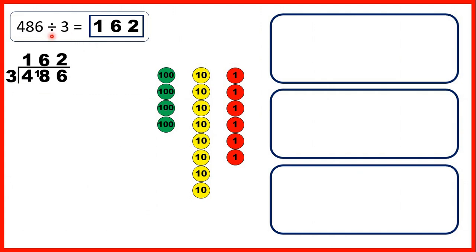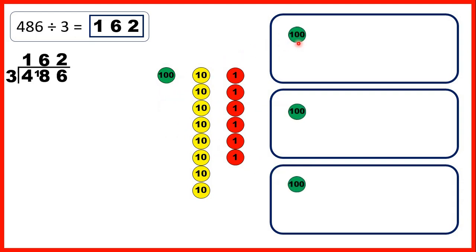Now let's look back at this first question. We started with 486, so that's 4 hundreds, 8 tens and 6 ones, and we were dividing by 3. We can share these place value counters out into 3 groups. We started by dividing our hundreds digit, so our 4 hundreds. We can share out 3 of those hundreds and that gives us 1 hundred in each group, which is why we have 1 as the hundreds digit of our answer.